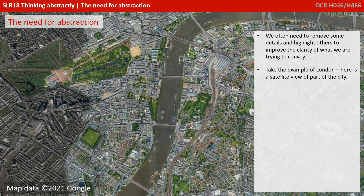We often need to remove some details and highlight others to improve the clarity of what we're trying to convey. Take the example of London.